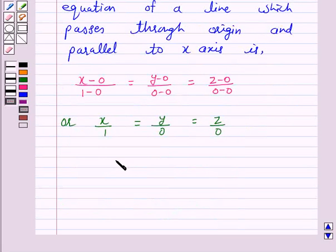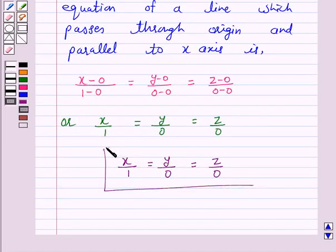Hence, the answer for the above question is x over 1 is equal to y over 0 is equal to z over 0. So this completes our session. I hope the solution is clear to you. Bye and have a nice day.